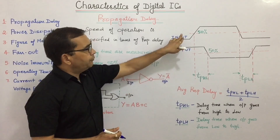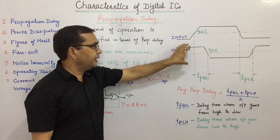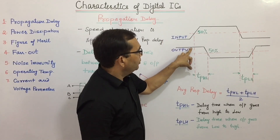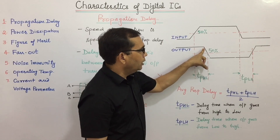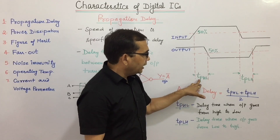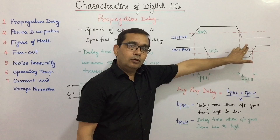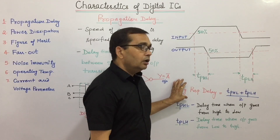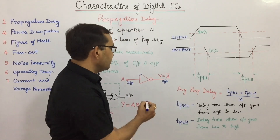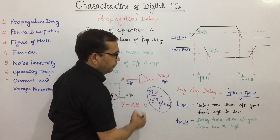Propagation delay is generally measured between 50% of the transition of the input and output. When we apply an input signal to a gate, such as an inverter or NOT gate, we won't get the output instantly — it takes a certain time for the output to go from high to low. This delay time is represented by TPHL, meaning the time period when the output goes from high to low. The delay when the output goes from low to high is represented by TPLH. The average propagation delay is the average of these two delay times, and it is always measured in nanoseconds — that is, 10 raised to the power minus 9 of a second.